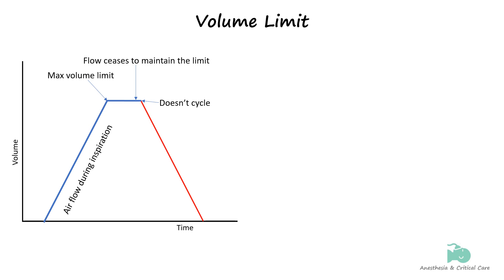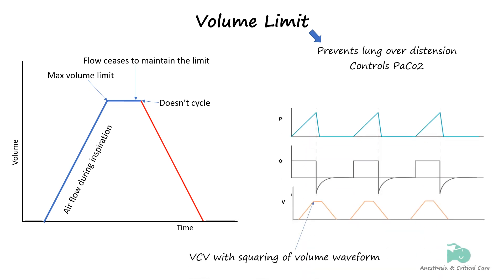The volume limit ensures that there is no overdistension and lung trauma, and helps maintain tight control over minute ventilation and partial pressure of carbon dioxide in arterial blood. Volume limits are employed in volume control ventilation where we find squaring of volume-time waveform.